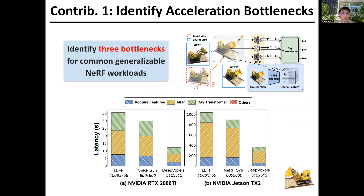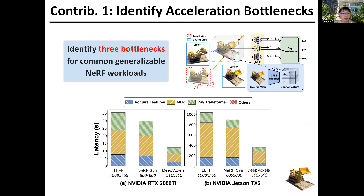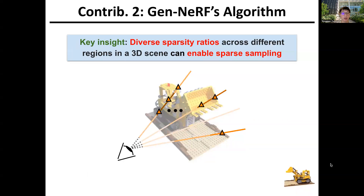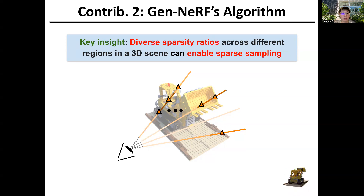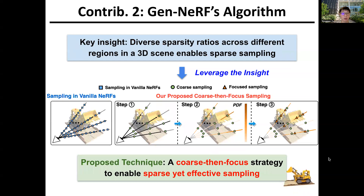Our first contribution is to identify the three bottlenecks for common generalizable NeRF workloads. To tackle each of them, on the algorithm side, our key insight is that the diverse sparse ratios across different regions in a 3D scene can enable sparse sampling, thus reducing the required computation. We instantiate this insight into a cross-then-focus scheme to enable sparse yet effective sampling.